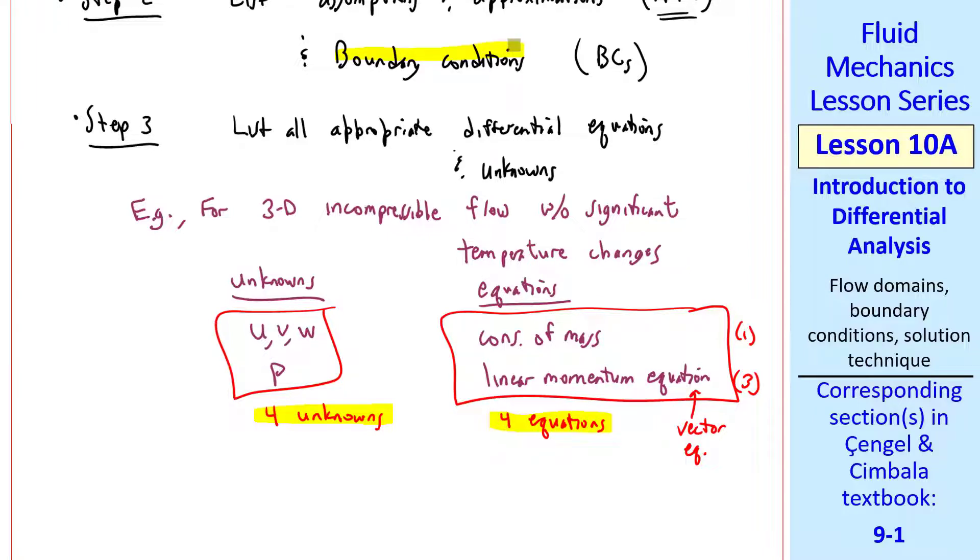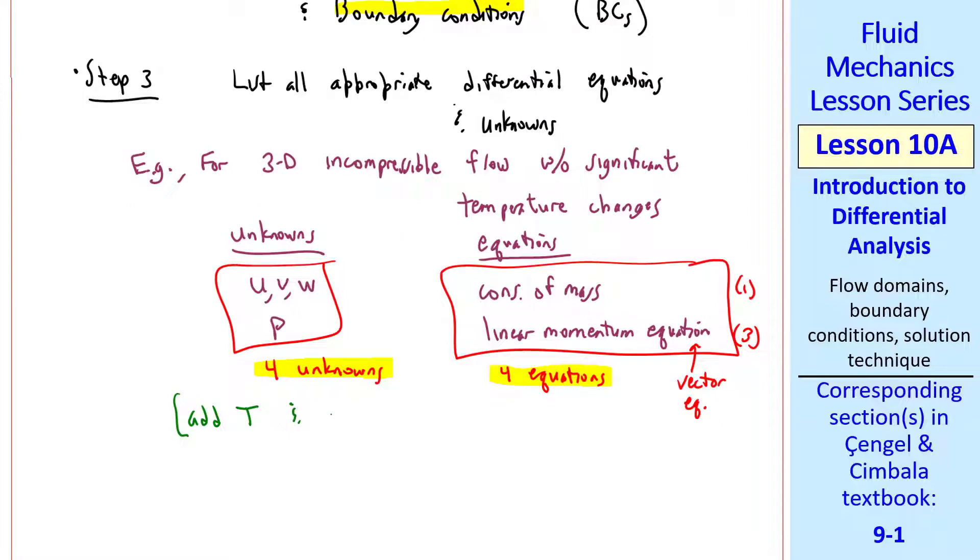We can add temperature and an energy equation, if temperature effects are important, and that usually requires density and an equation of state as well. Then you'd end up with 6 equations and 6 unknowns.